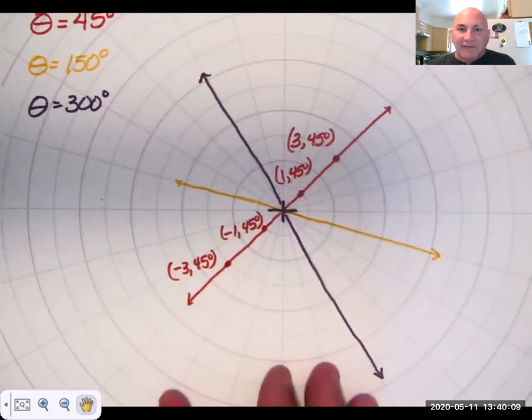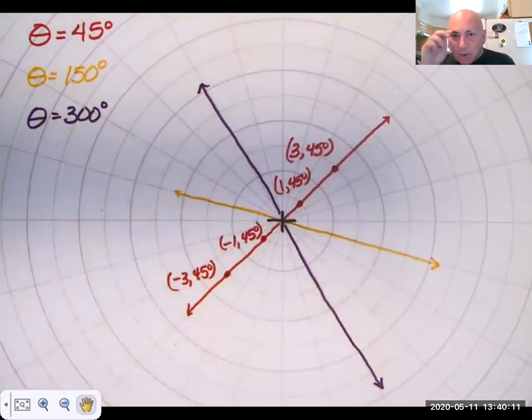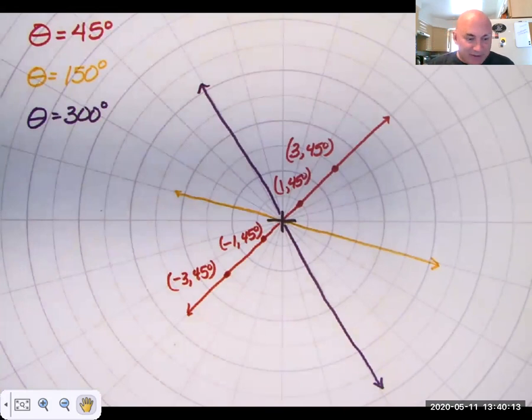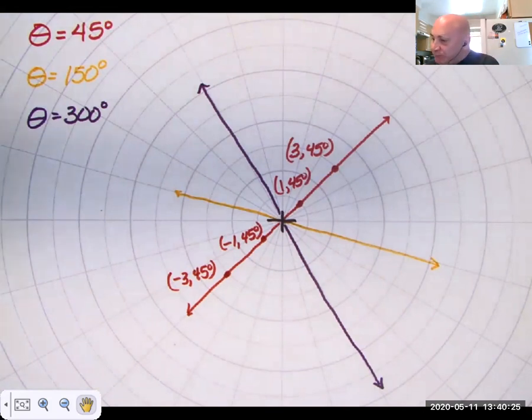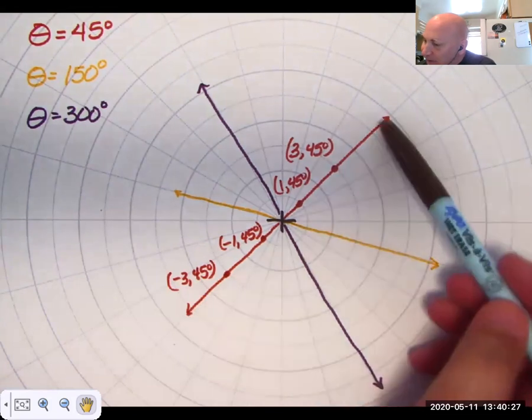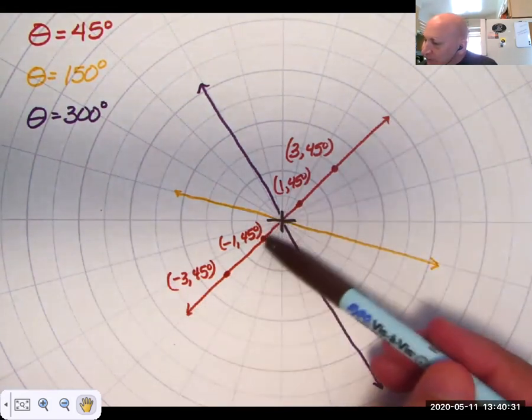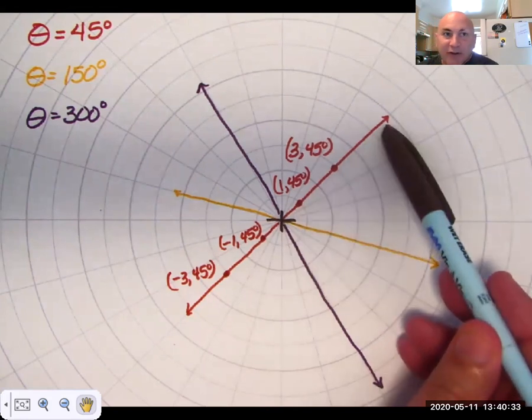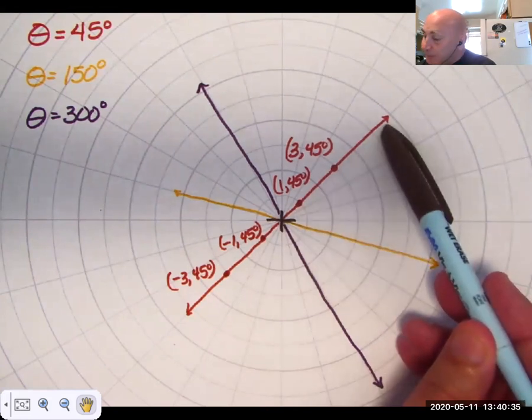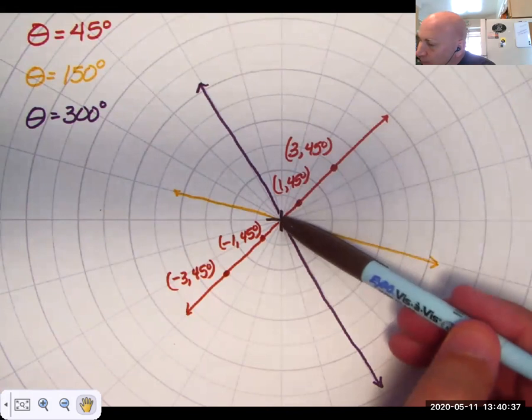So here is a graph using polar graph paper, which you can download from printablepaper.net. This red line is the equation, here's my pole or origin. This is the equation theta equals 45 degrees. It's a constant. So just to show you some of the points.